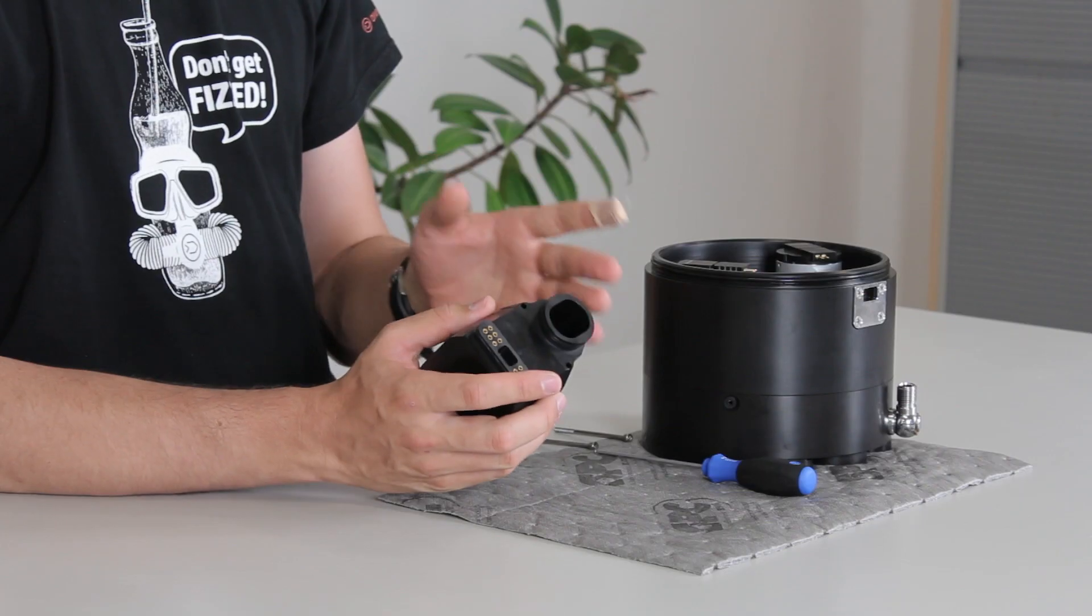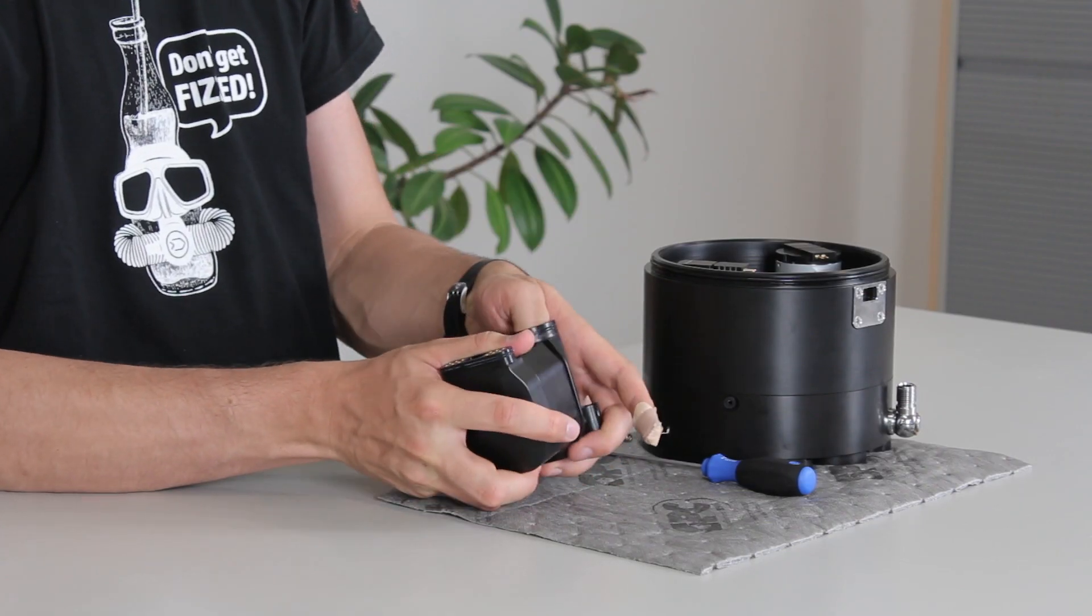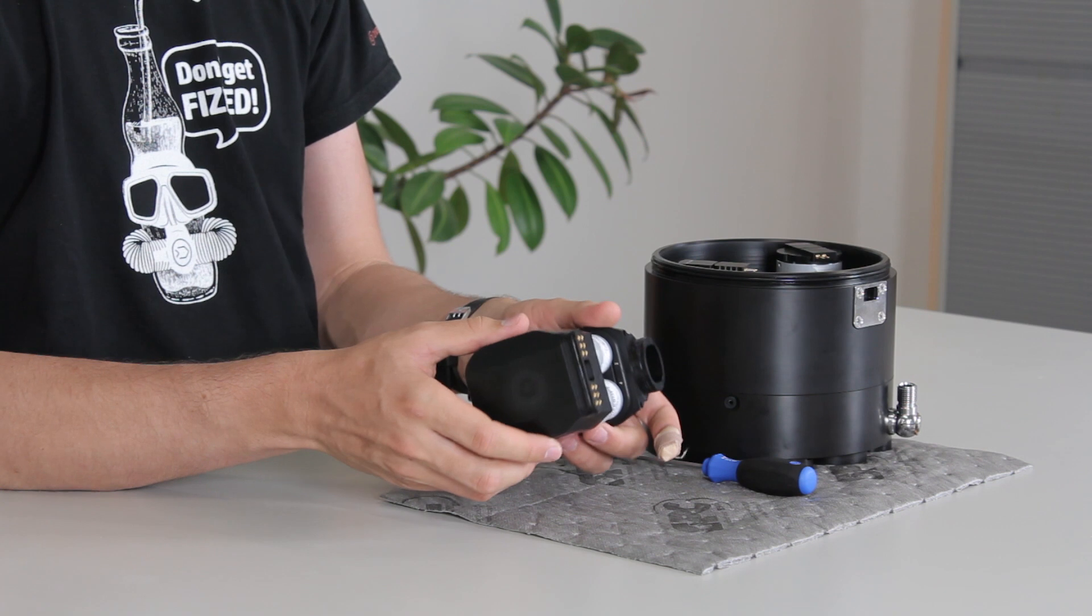First thing you'll need to do is remove the sensor block from the head. After you've done that, you will need to open up your sensor block to reveal the sensors.